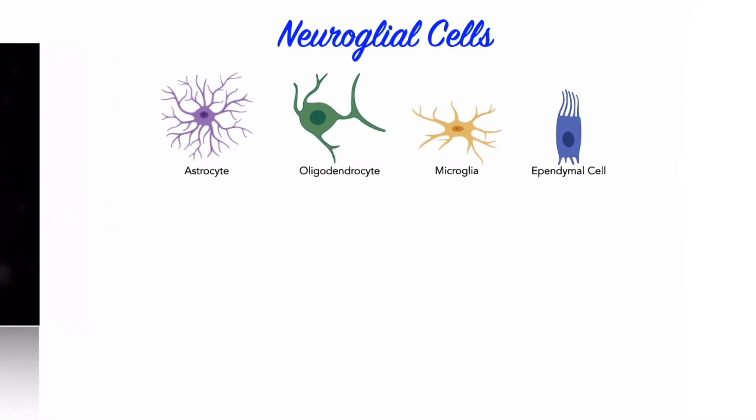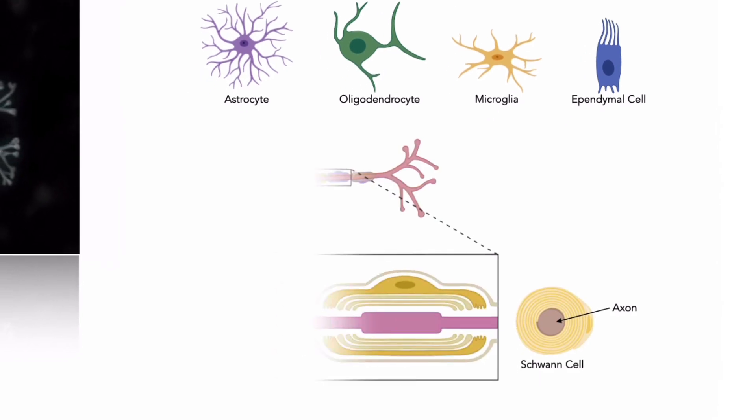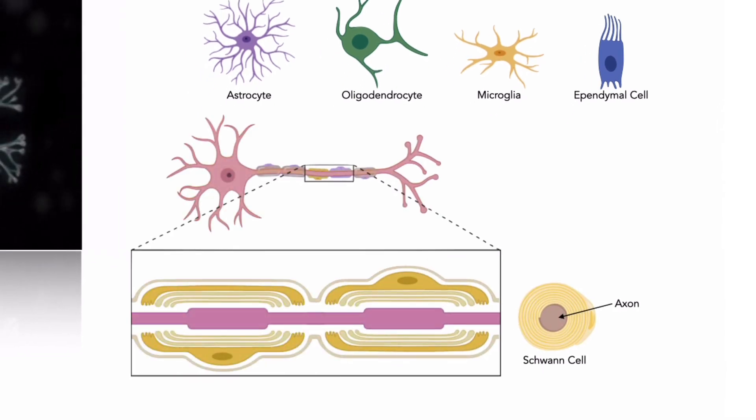The neuroglial cells play a sustentacular role, that is, they sustain the neurons. They provide support for neural tissue in both physical and chemical maintenance of the neurons and their surrounding environment. Neuroglial cells nourish neurons, defend them from infection, and insulate and protect the integrity of neural tissue.